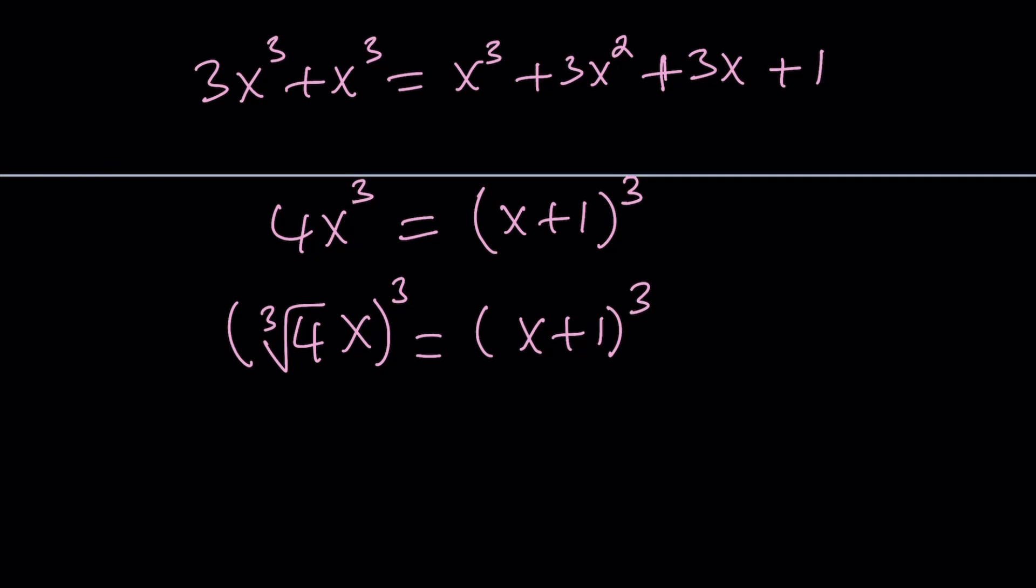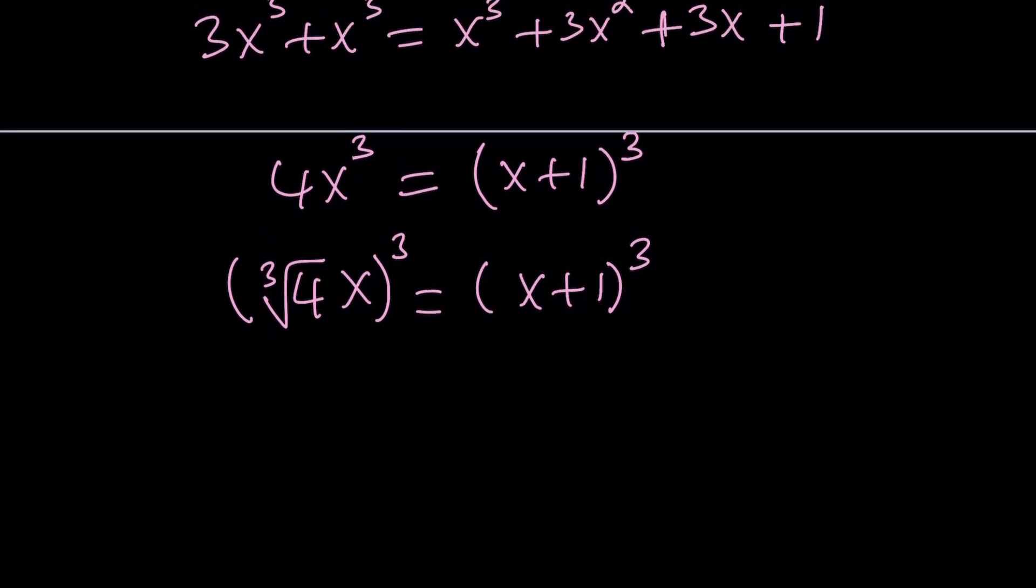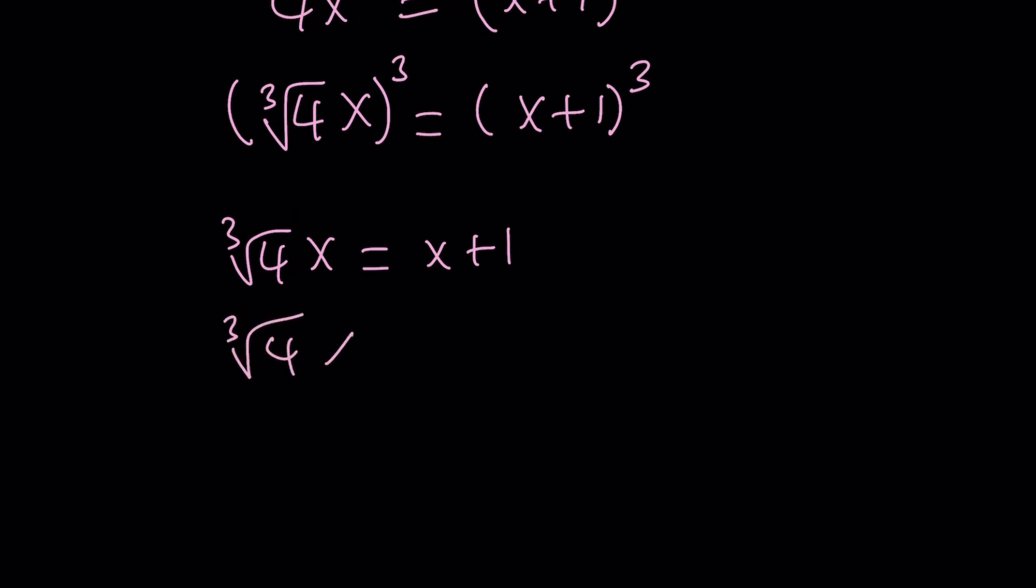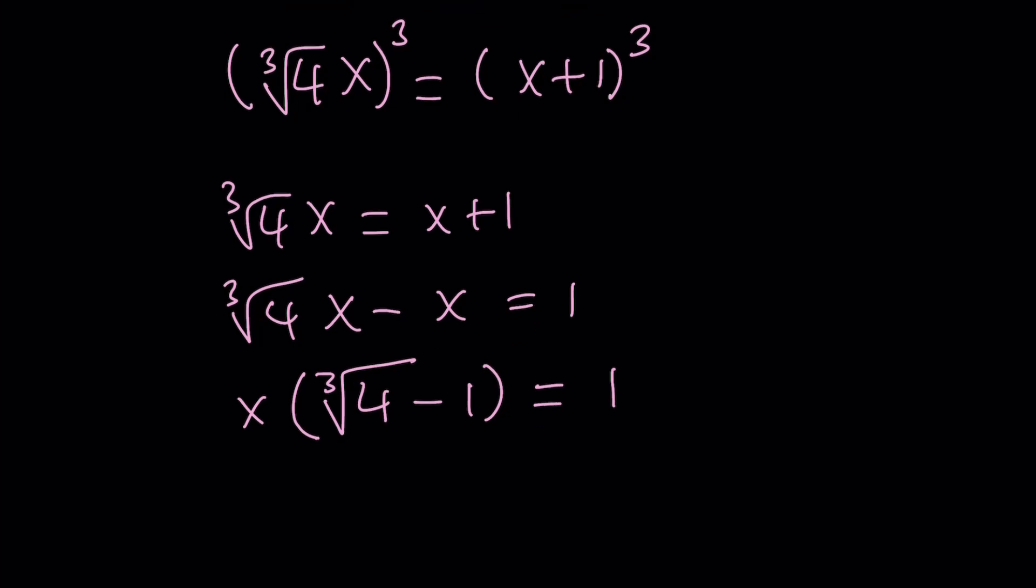Since we have cubes on both sides, we can actually cube root both sides. And when we do, we're going to get a real solution. What about the other solutions? They're complex because there's no way you can get other real solutions from here. Let's go ahead and write this as follows. Cube root both sides. Cube root of 4x equals x plus 1. Since I want to solve for x, let's bring the x terms on the same side and use factoring. We're going to take out x cube root of 4. Cube root of 4 minus 1. Now, notice that the cube root of 4 is greater than 1. So, this is going to be a positive answer. And x becomes 1 over cube root of 4 minus 1.